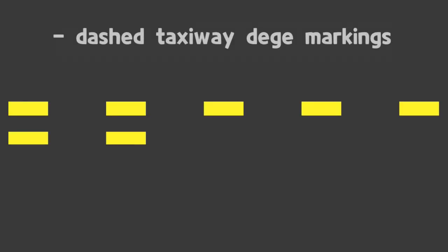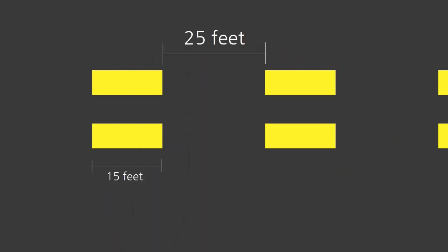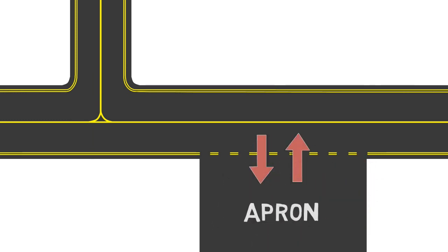Dashed taxiway edge markings consist of a broken double yellow line. The lines are 15 feet in length with 25 feet gaps. Dashed taxiway edge markings are used when the aircraft would need to cross the lines, for example when a taxiway enters or crosses aprons.